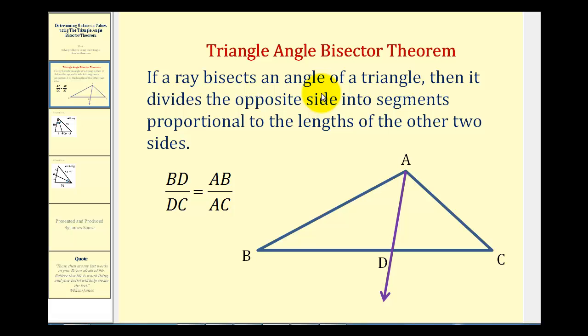The triangle angle bisector theorem states that if a ray bisects an angle of a triangle, as we see here in purple, meaning this angle here is congruent to this angle here, then it divides the opposite side into segments proportional to the lengths of the other two sides of the triangle. Meaning the length of BD to the length of DC will be equal to the ratio of the length of AB to the length of AC.